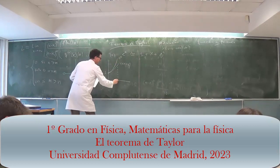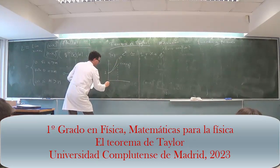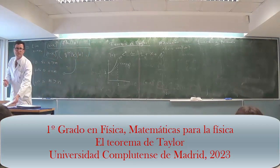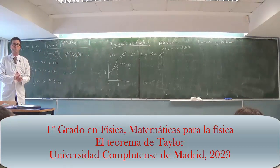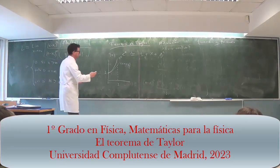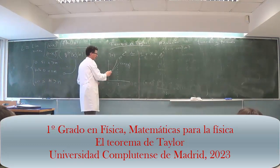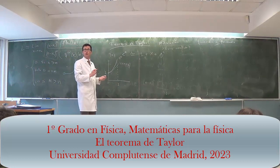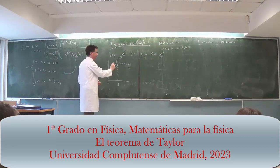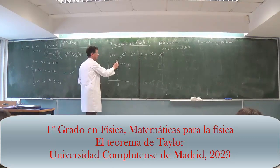I look at the error in the interval [0, 1] and I look at the point where I'm wrong using that approximation. In this case, which is very easy, the place where I'm most wrong with the approximation is at the extreme of the interval, at 1. That is to say, the biggest error is this distance.